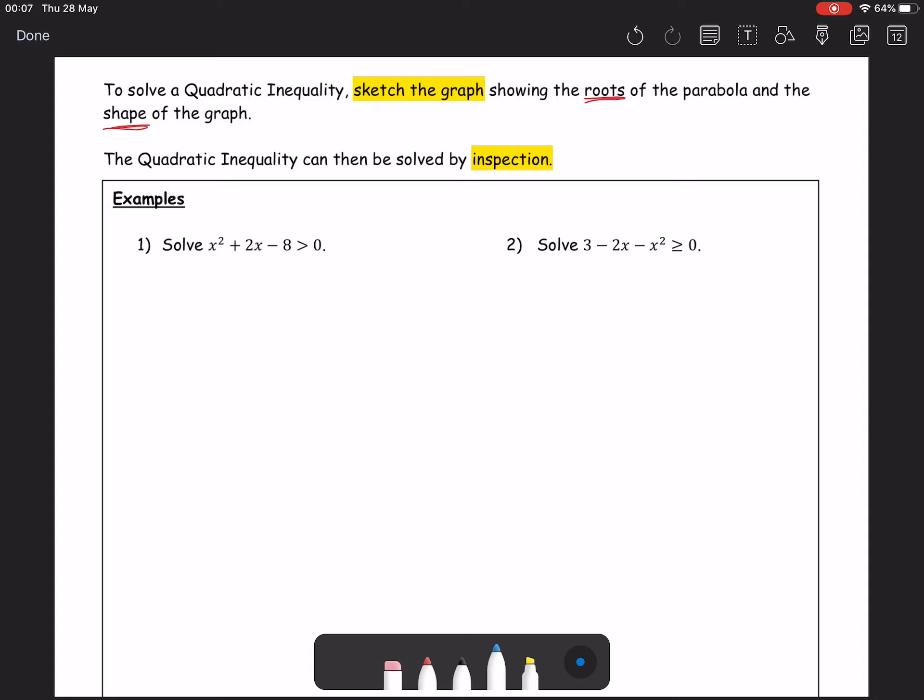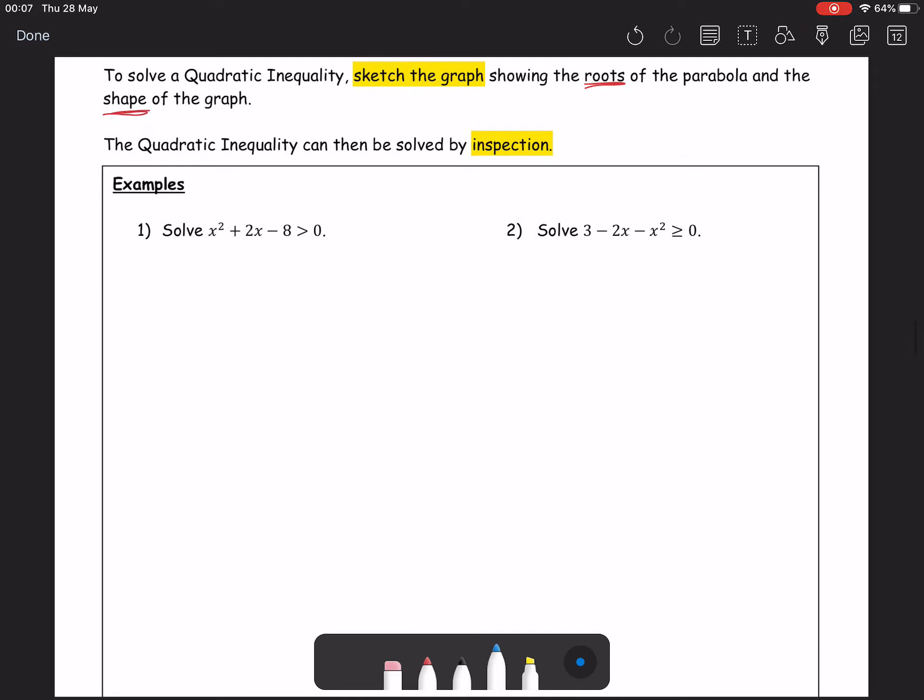So in question one, we want to know when this quadratic, x² + 2x - 8, when is it greater than 0? So let's try and work towards our sketch. So to find our roots, our roots occur when y is equal to 0. So let's make the quadratic equal to 0. And in that situation, quadratic equal to 0, every single time we factorize and solve.